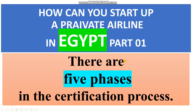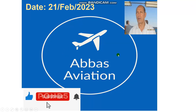There are five phases in this certification process. I will speak about what Egypt is, where Egypt is, and what the series covers. This is my channel, Abbasavision. This is the date of issue and my photo.